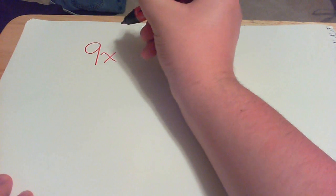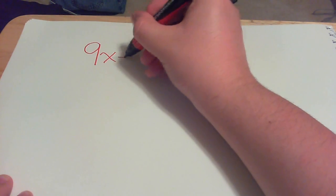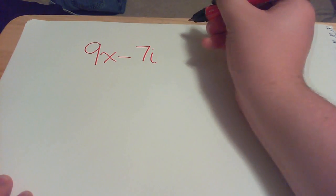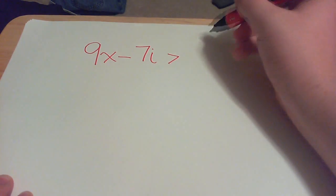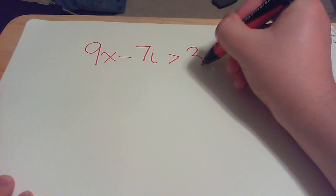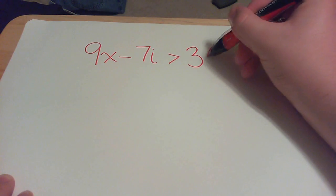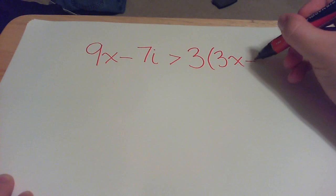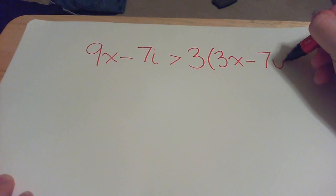All right, so here is what the equation is. It is 9x minus 7i is greater than 3 times the quantity of 3x minus 7u.